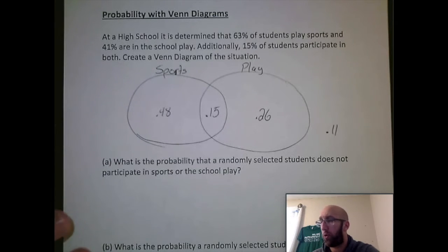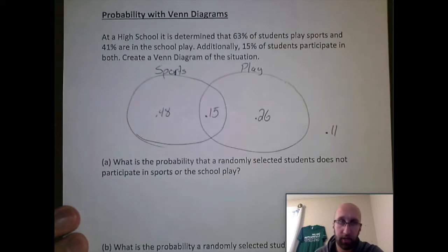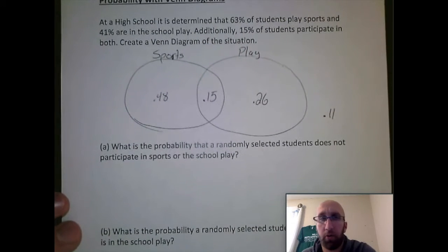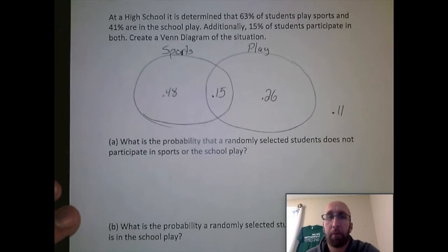We're still using that same example from earlier where we had students who either played sports or were in the school play or both. So we have our Venn diagram here. What we want to know is, what is the probability that a randomly selected student does not participate in sports or the school play?